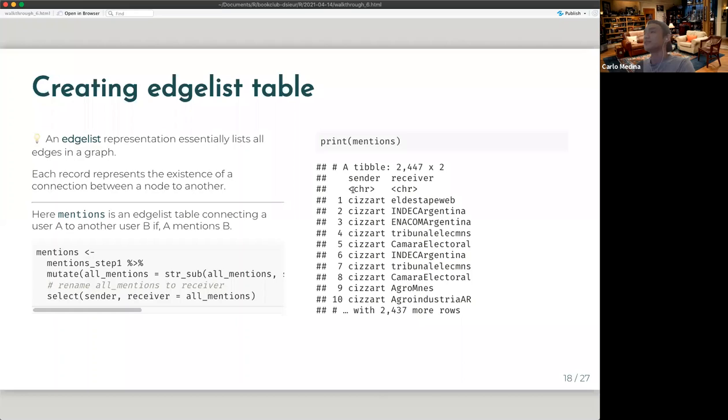So the thing that we created is an edge list table. So an edge list table is one of the different representations of a graph. So an edge list basically lists out for a given row, node one, node two, node one, node two, which corresponds to a connection exists between node one to node two. So the dimensions data frame that we created is an edge list.